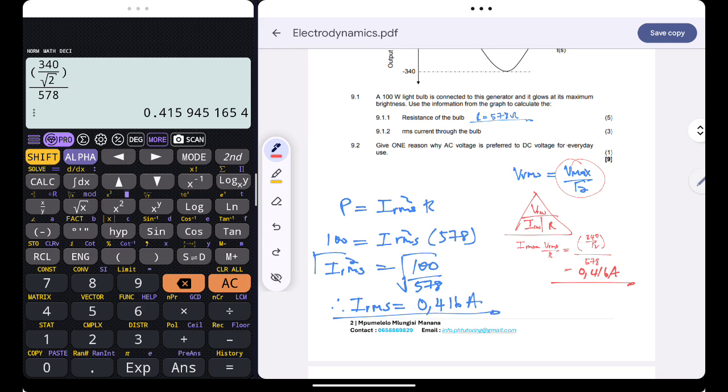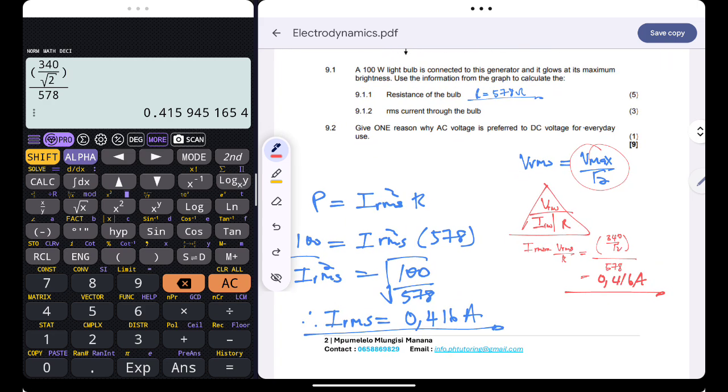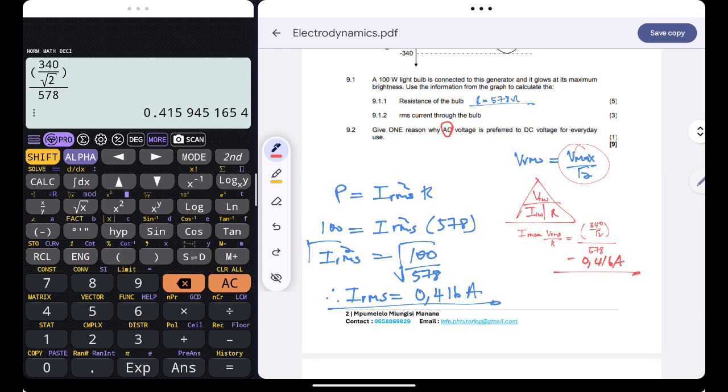Give one reason why AC voltage is preferred to DC voltage for everyday use. Because alternating current can be stepped up or down during transmission. That's why it's preferred, it can be stepped up or down during transmission.